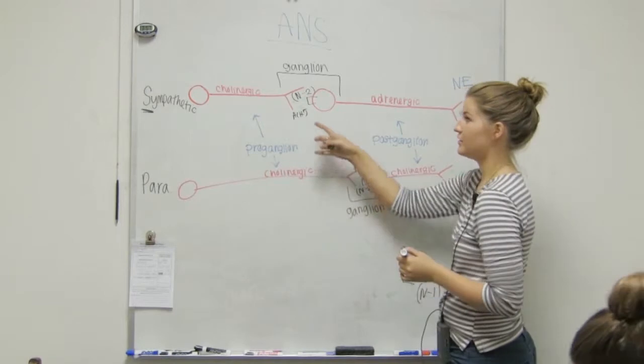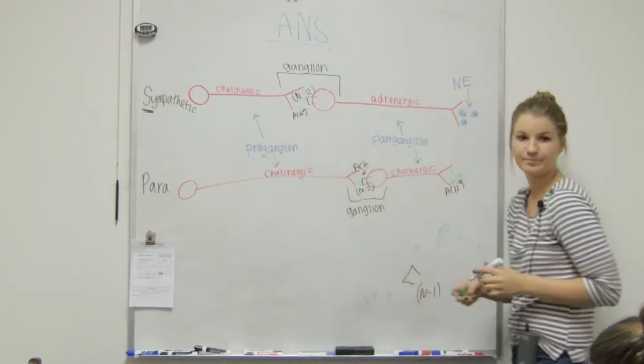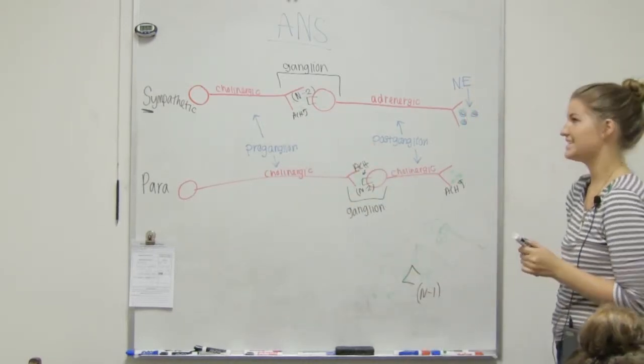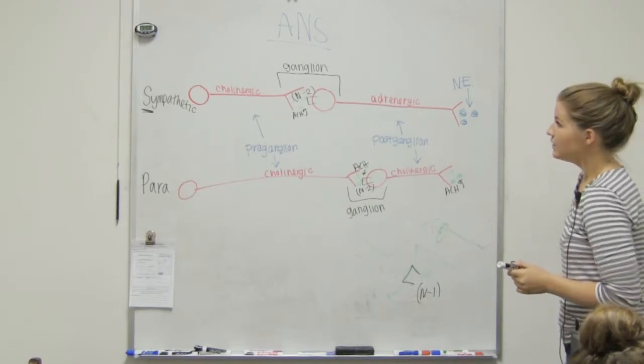All preganglionics are going to release the acetylcholine. That's going to bind to an N2 receptor. Nicotinic.